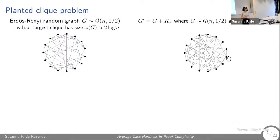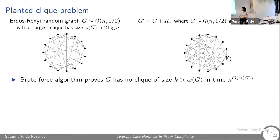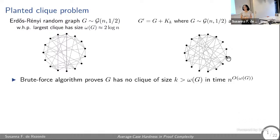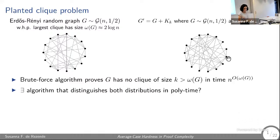I'll start with the planted clique problem, which you all know well. We have two distributions: a random graph G(n, 1/2) and a random graph with a planted clique of size k. Using ω(G) to denote the size of the largest clique, in a random graph with edge probability one-half, that's going to be roughly 2 log n. There's a brute force algorithm that proves G has no clique larger than the clique number, running in time n to the clique number.